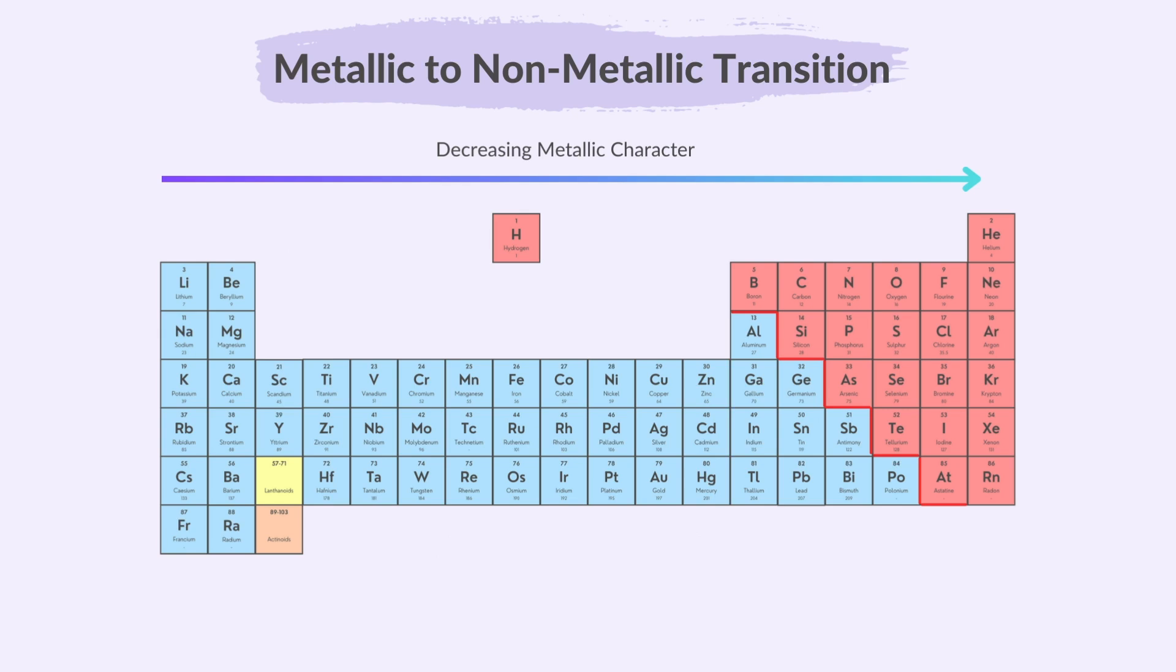So, on the left side of the periodic table, as shown in blue for illustration, are the metals. And on the right side of the periodic table, as shown in peach for illustration, are the non-metals.